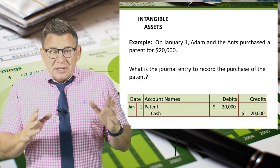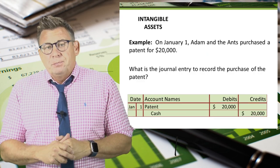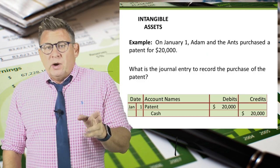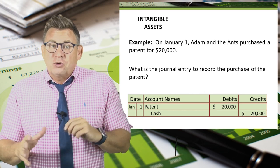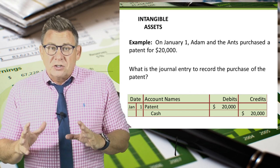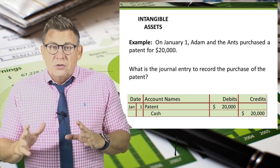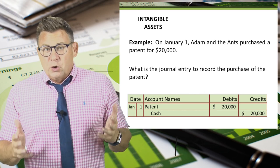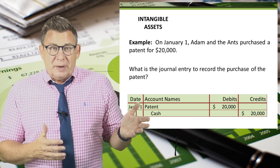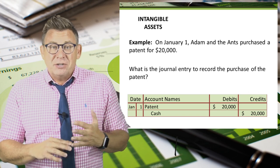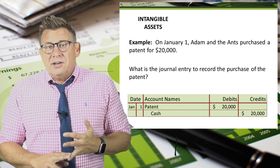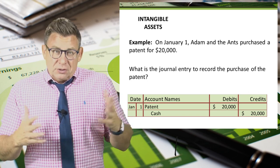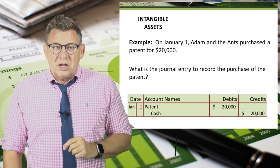So let's look at an example. On January 1, Adam and the Ants purchase a patent for $20,000. The journal entry to record the purchase of the patent is a debit to patent and a credit to cash for $20,000.